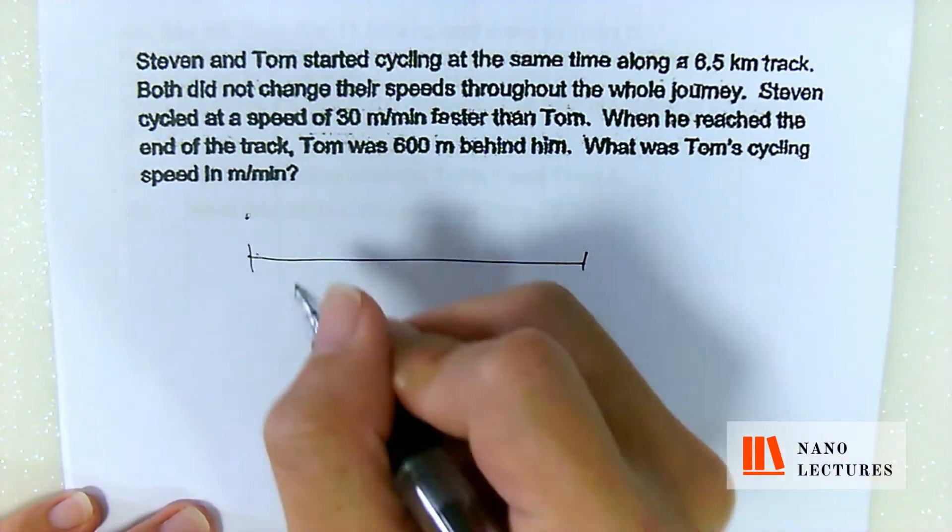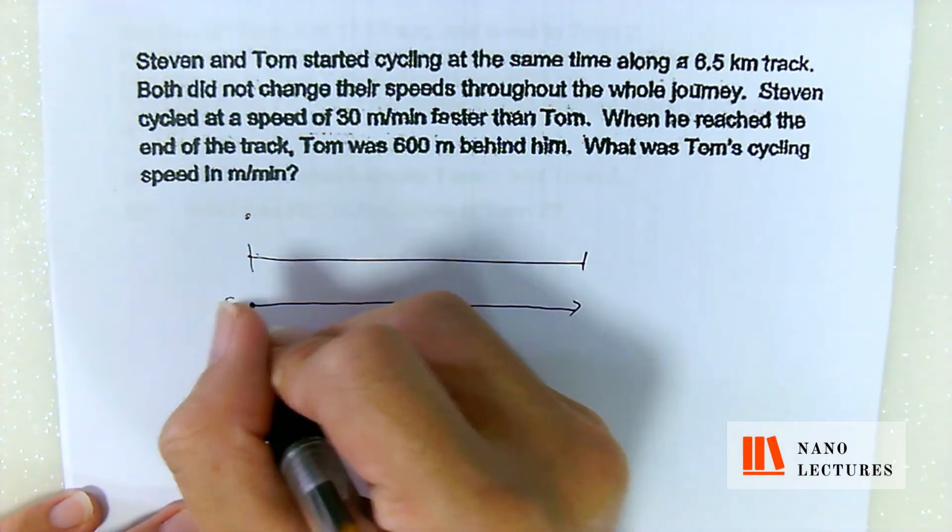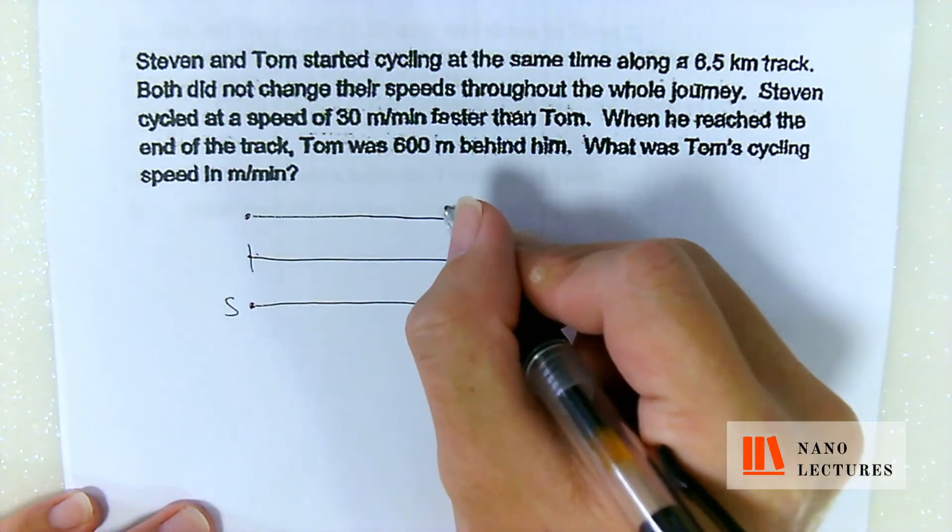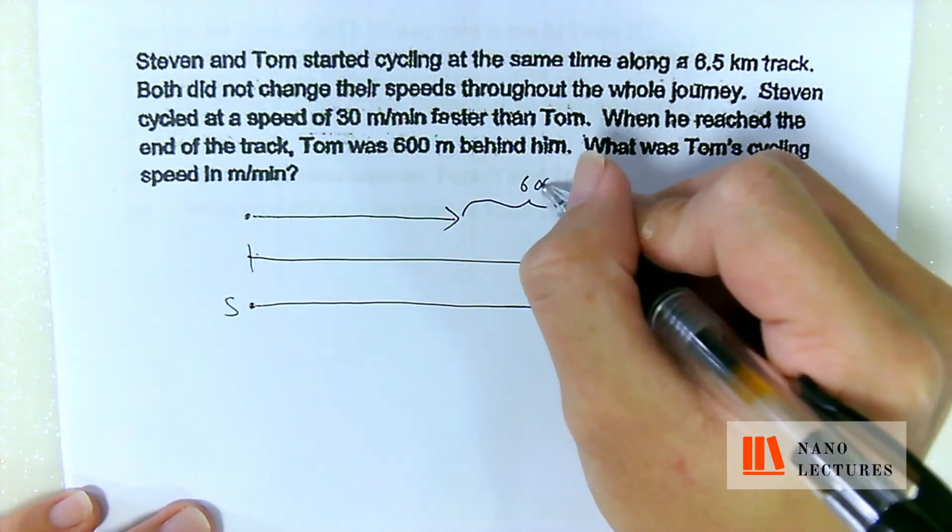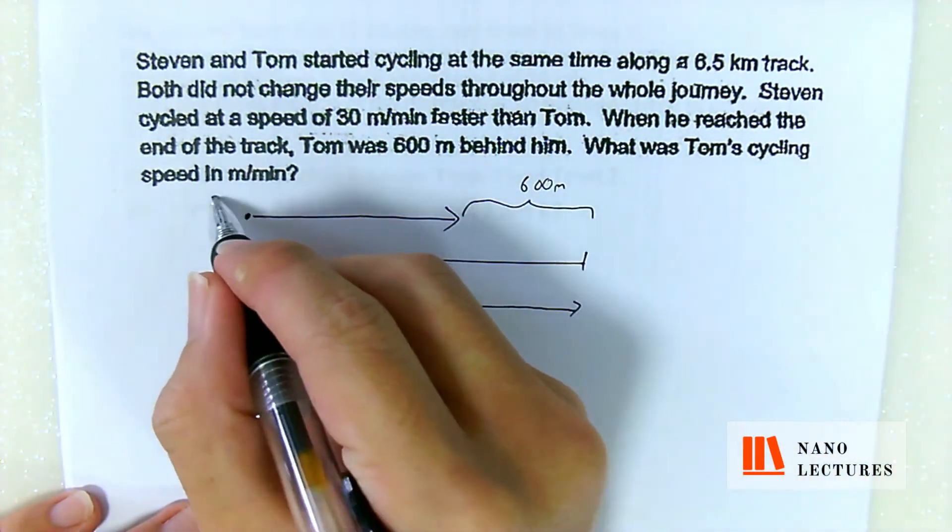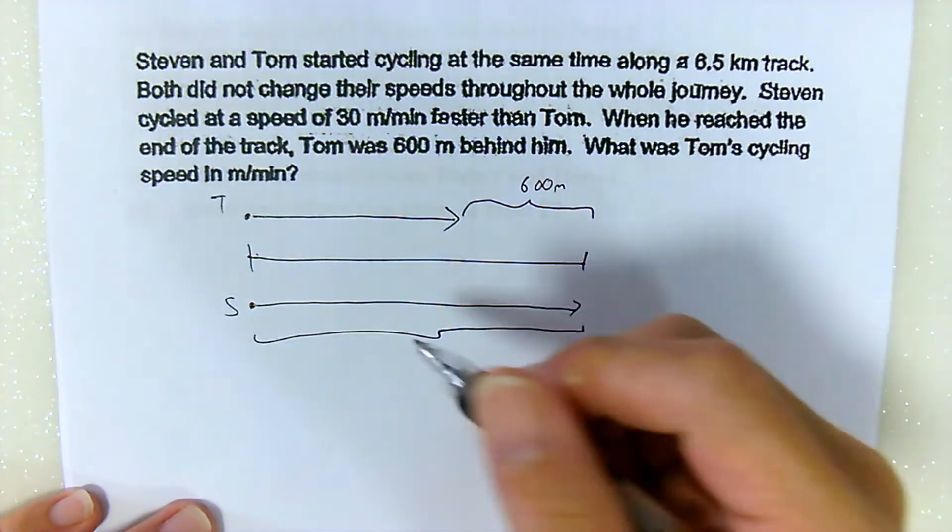So we know that Steven and then Tom. When Steven reached the end, Tom was 600m behind him. Which means that from here to here is 600m. This one is Tom. And the entire thing here is 6.5km.